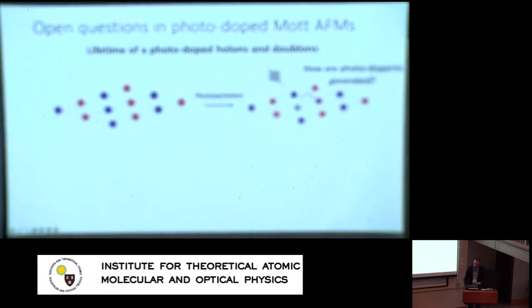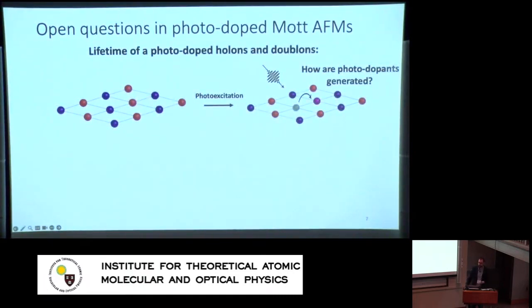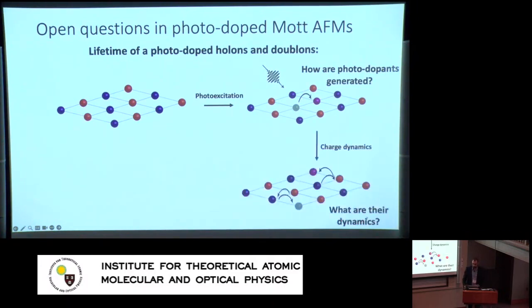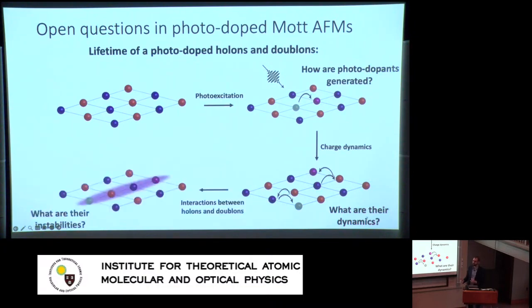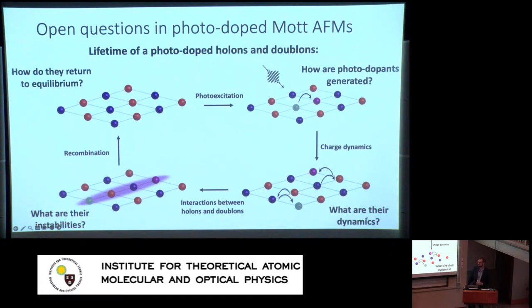What are these open questions? Initially, there's the question of photo-excitation — how are these photo-dopants actually generated? For example, does the Mott gap collapse, or are we just moving charges around? Then there are questions about their dynamics: how do they move? This begs the question of spin-polarons — how are these carriers renormalized as they move through the antiferromagnetic lattice? And then: are there interactions between holons and doublons? Do these interactions cause instabilities? And finally, how do they recombine? This question of recombination has been studied extensively in semiconducting systems, but needs more investigation in the case of Mott insulators.